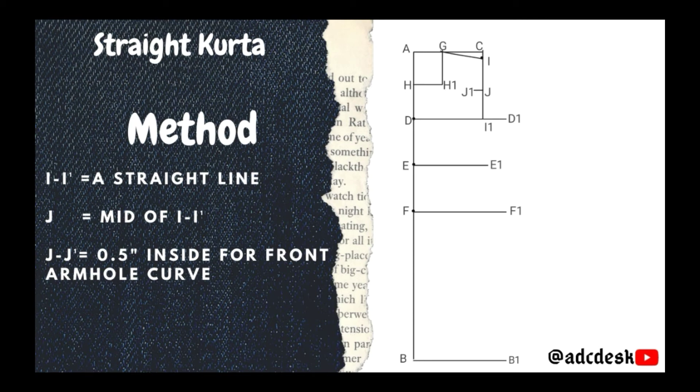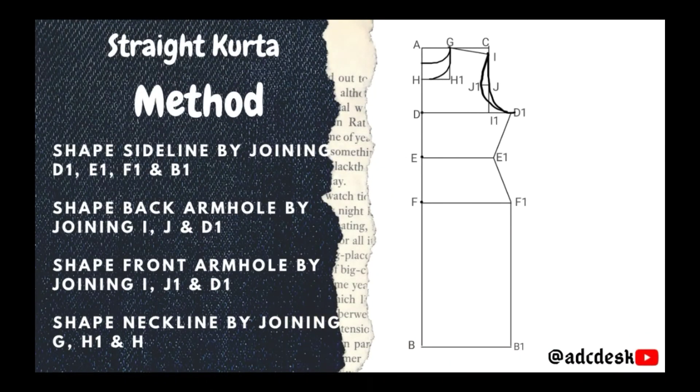Now shape the side line by joining B1, E1, F1, and D1. Shape back armhole by joining I, J, and D1. Shape front armhole by joining I, J1, and D1. Shape neckline by joining G, H1, and H. You can shape back neckline also, which will be small.